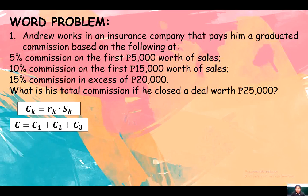He will also receive 10% commission on the next 15,000 worth of sales, and 15% commission in excess of 20,000. So what is his total commission if he closes a deal worth 25,000?